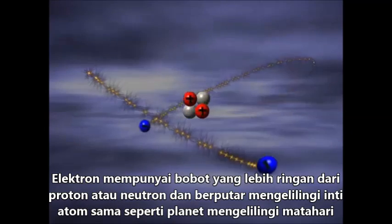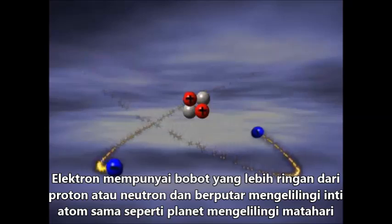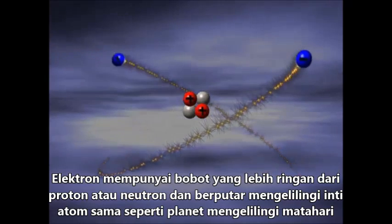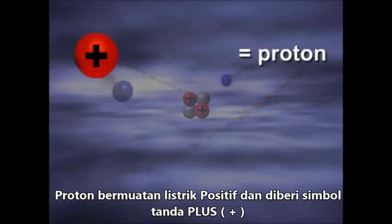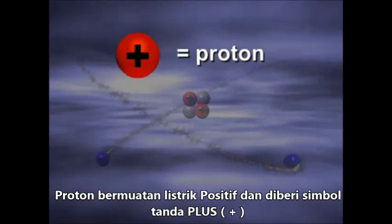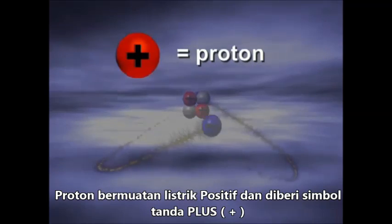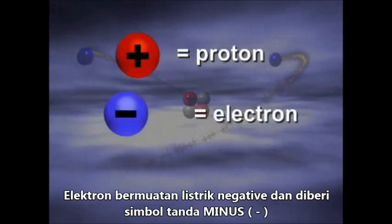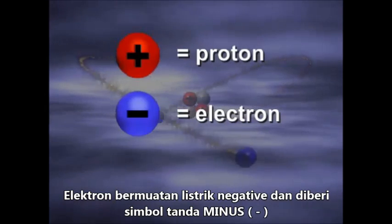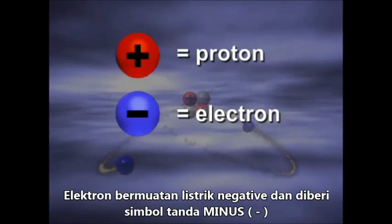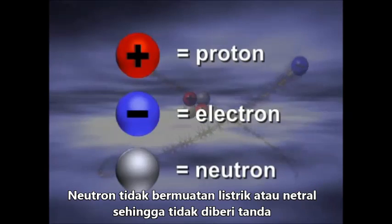Electrons are much lighter than neutrons or protons, and orbit around the nucleus in much the same way that planets orbit around the sun. The proton has a positive charge, and its symbol is a plus sign. The electron has a negative charge, and its symbol is the minus sign. The neutron has no charge, and therefore has no sign.